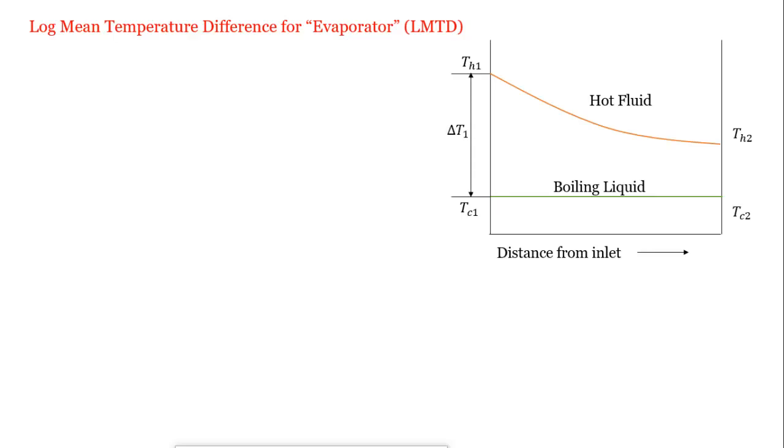Temperature difference delta T1 is TH1 minus TC1, and delta T2 is TH2 minus TC1. Here, TC1 equals TC2. In the condenser, we had TH1 equal to TH2; here the difference is TC1 equals TC2.